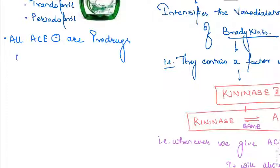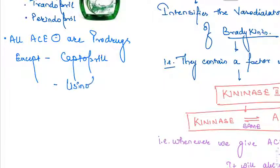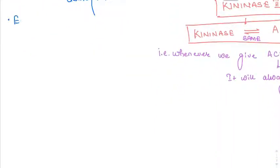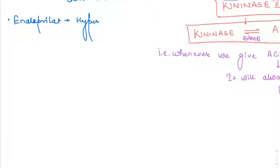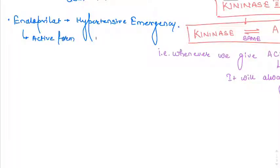All ACE inhibitors are prodrugs except captopril and lisinopril. The others exist in inactive form in the body and are converted to their active form. For example, enalapril's active form is enalaprilat, which can be used intravenously in hypertensive emergencies.